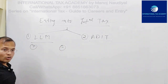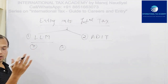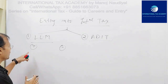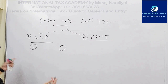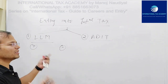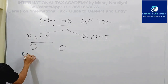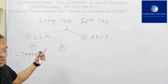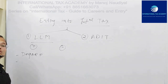The LLM — Master of Laws — is a full-fledged postgraduate degree. The first and biggest advantage is that it is a degree, a postgraduate degree. In the US and UK they call it a graduate degree, but essentially it's a postgraduate degree, and that is the biggest advantage.